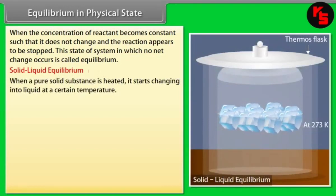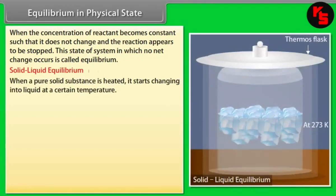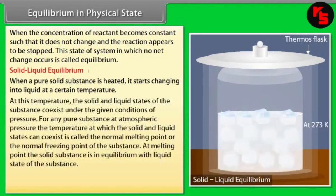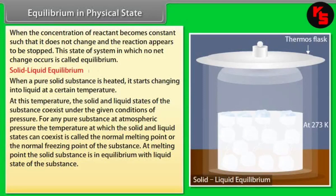Solid-Liquid Equilibrium. When a pure solid substance is heated, it starts changing into liquid at a certain temperature. At this temperature, the solid and liquid states of the substance coexist under the given conditions of pressure. For any pure substance at atmospheric pressure, the temperature at which the solid and liquid states can coexist is called the normal melting point or the normal freezing point of the substance.